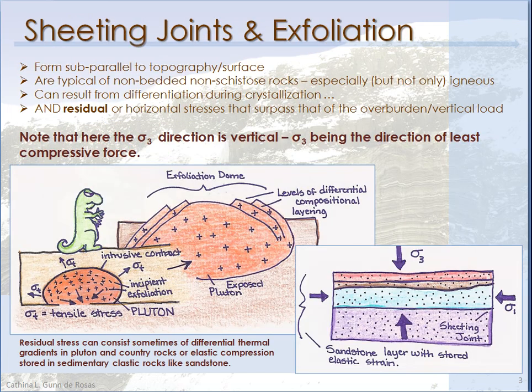The next thing to talk about is sheeting joints and exfoliation. This is something you typically see in rock that's not bedded and not schistose. Often you'll see it in igneous rocks exposed at the surface, and in some sedimentary rocks like sandstone that doesn't have schistosity. These are tensile joints that form parallel to the surface of the Earth or to the local topography. Since tensile joints form in the direction of sigma-3, and we know there's usually overburden stress, at first we might be confused as to why joints would form this way. They only form parallel to the surface when horizontal stress actually exceeds what's coming down from the overburden, creating an environment where you can have sheeting or exfoliation.